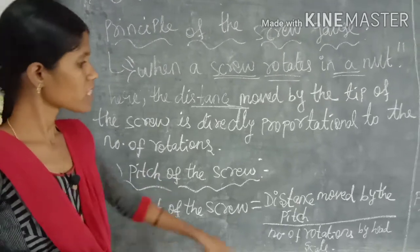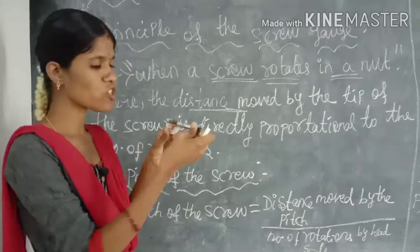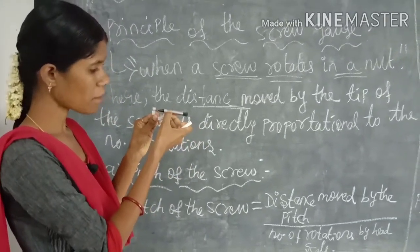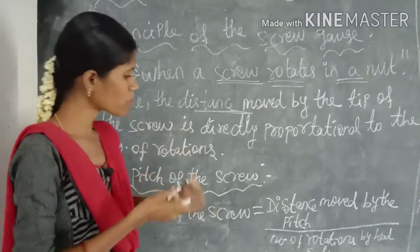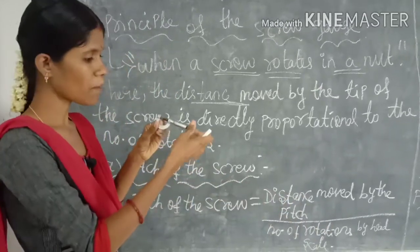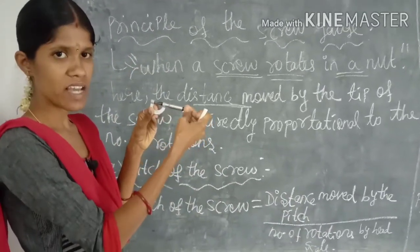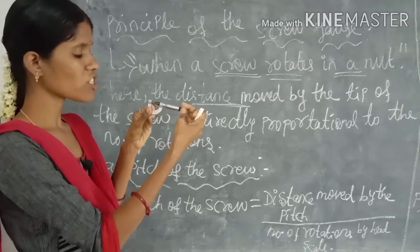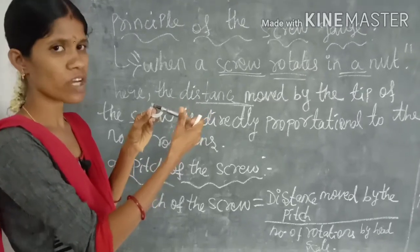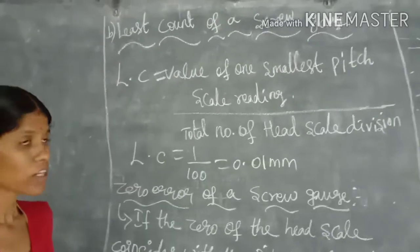The pitch of the screw is the distance moved by the screw tip in one rotation, divided by the number of rotations of the head scale. This gives us the pitch value, which is used in further calculations.